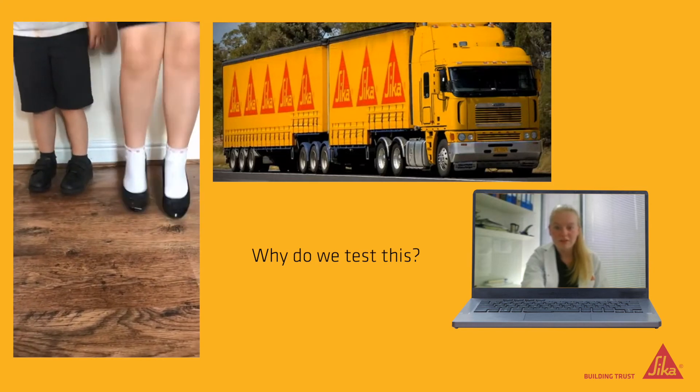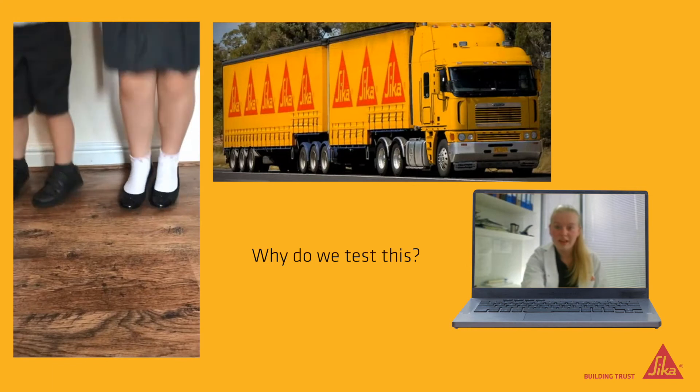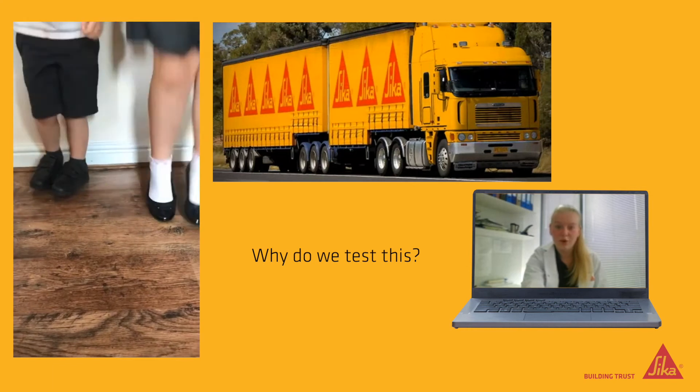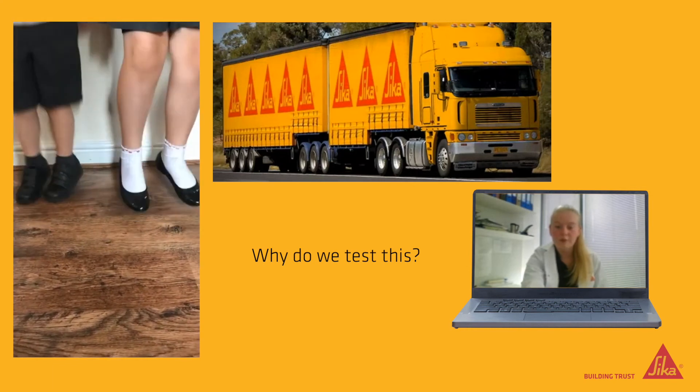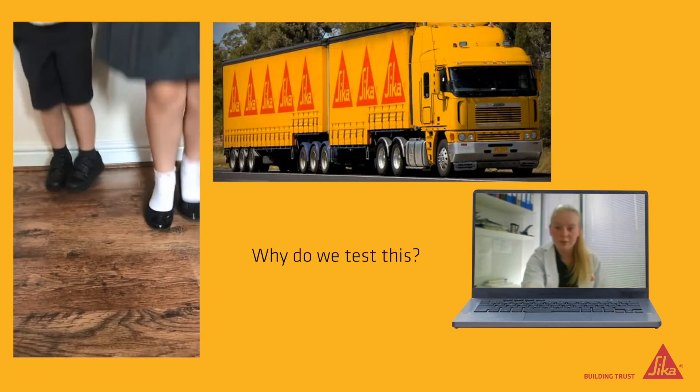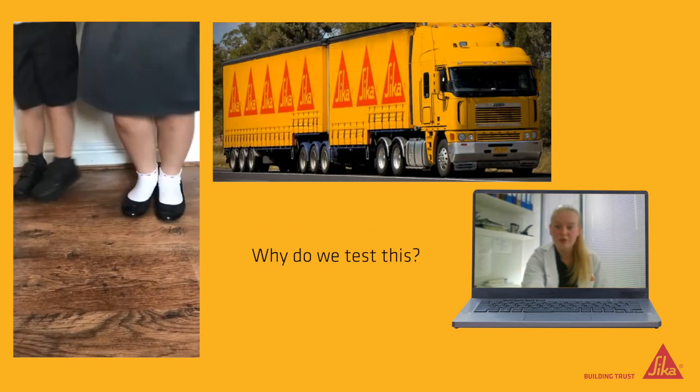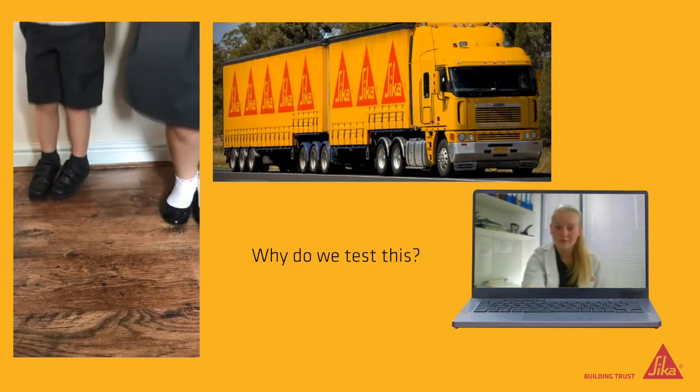If the material that tears was on a roof, then it would let the rain in, spoiling whatever is underneath. Or if it was glue holding a window in place, the window could fall out.